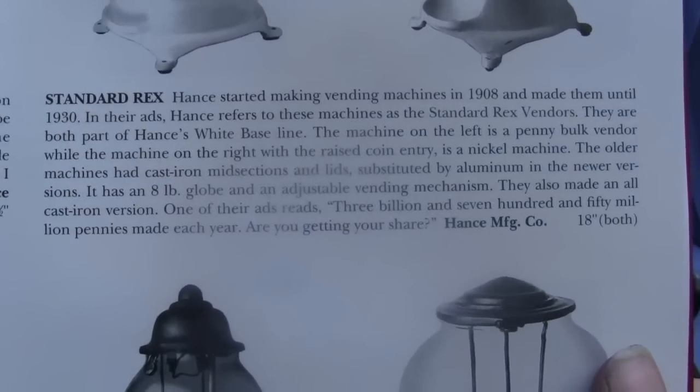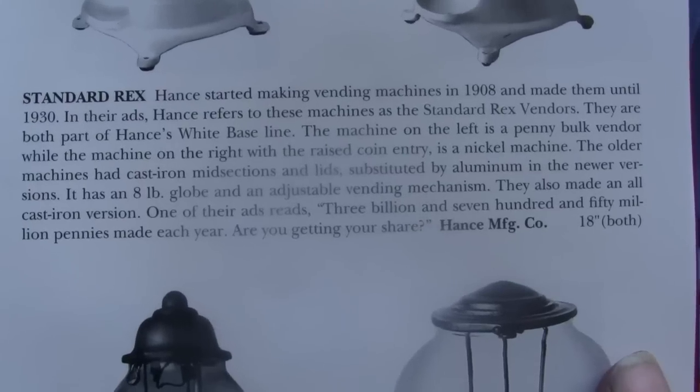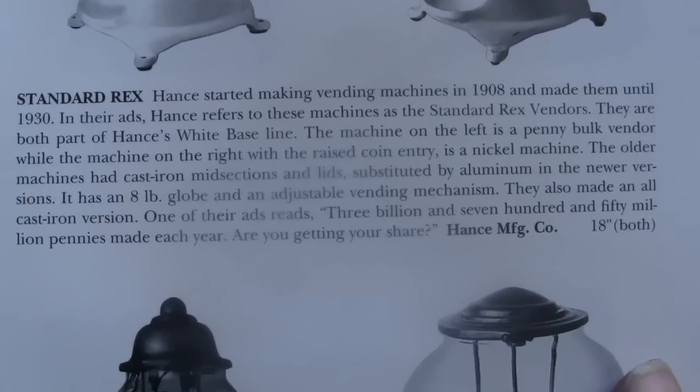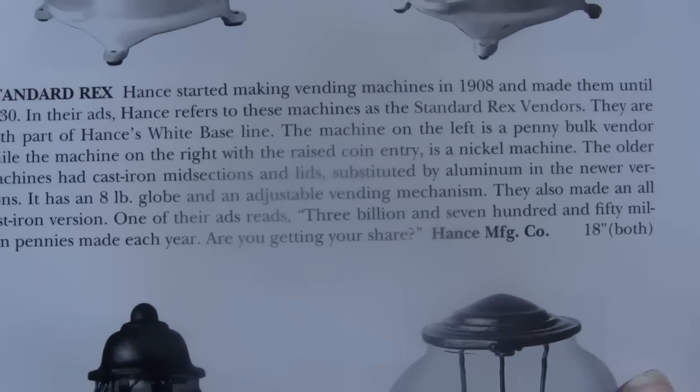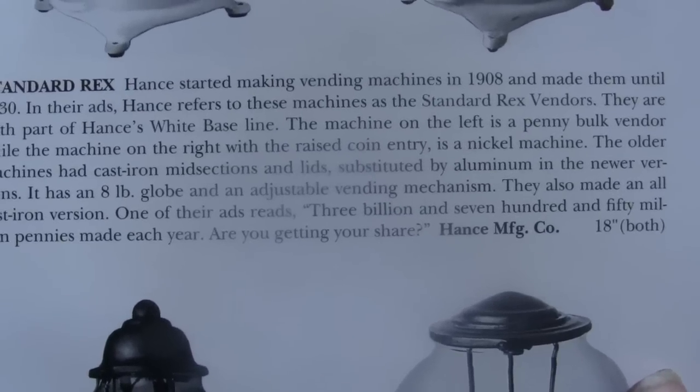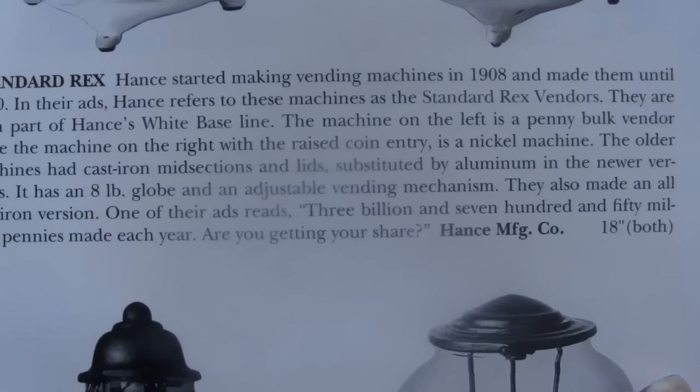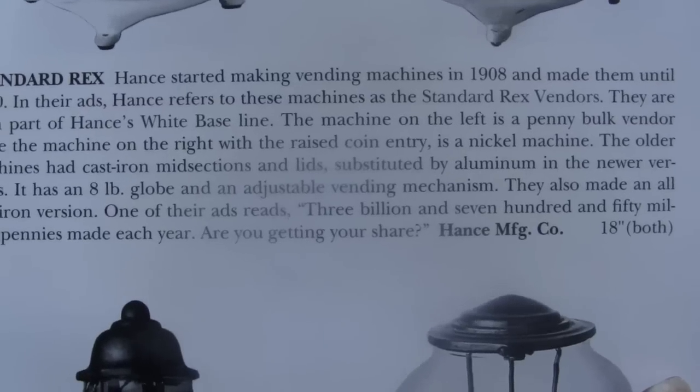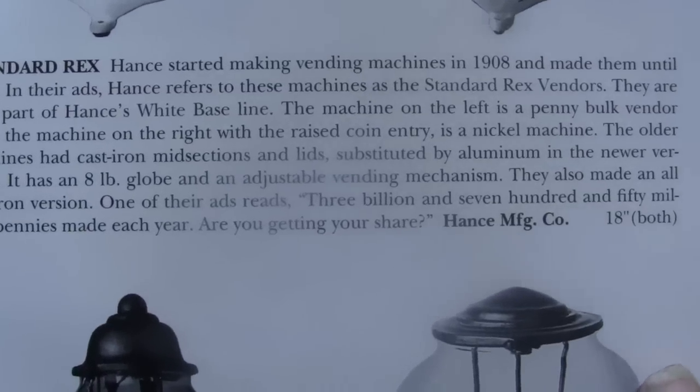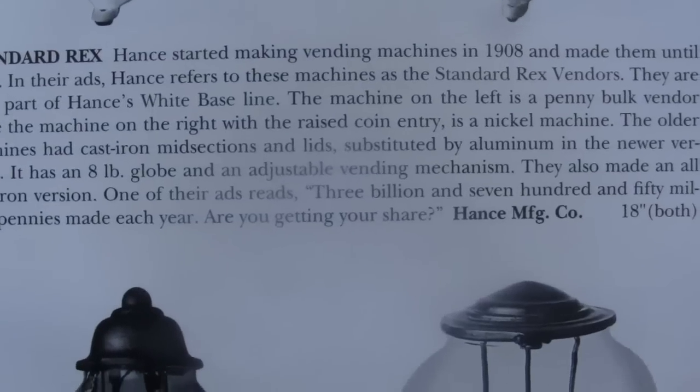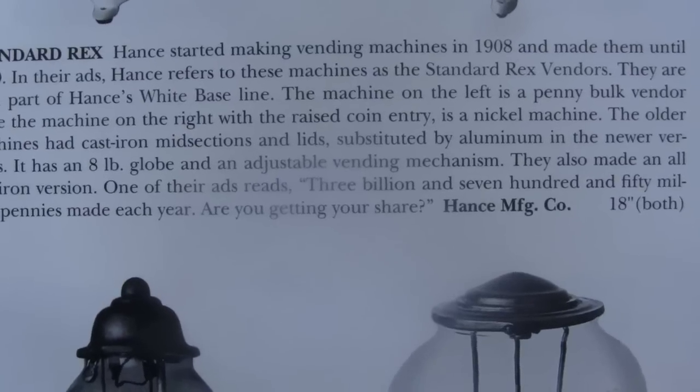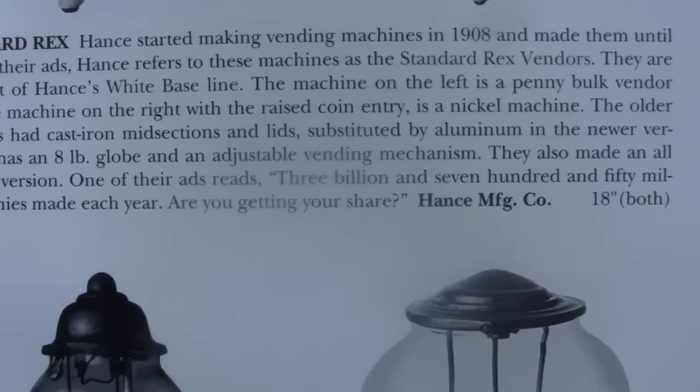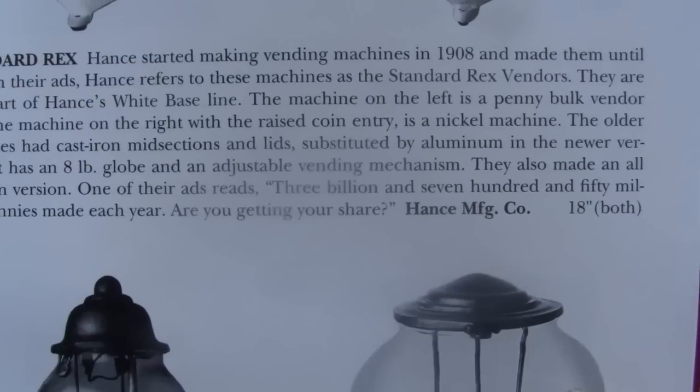Hans started making vending machines in 1908 and made them until 1930. In their ads, Hans refers to these machines as the Standard Rex vendors. They are both part of Hans' White Base Line. The machine on the left is a penny bulk vendor, while the machine on the right is a raised coin entry as a nickel machine. The older machines had cast iron mid-sections and lids, substituted by aluminum in the newer versions. It has an eight-pound globe and an adjustable vending mechanism. They also made an all-cast iron version.